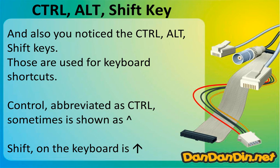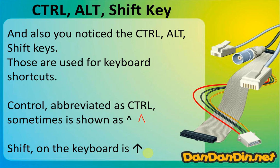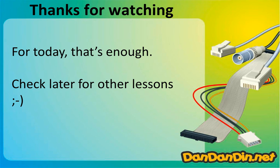You know from every day use the CTRL, ALT, and SHIFT keys. CTRL is abbreviated as CTRL. SHIFT on the keyboard is shown as an arrow up — when you press it, it changes letters to capitals. And the Windows key — when you press it, it opens the Start menu. There are a lot of shortcuts, but that might make this lesson too long for today. So check back later for other lessons, and sorry if my pronunciation is not very good — I'm Italian, not English. Thanks for watching! See you next time.